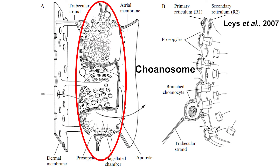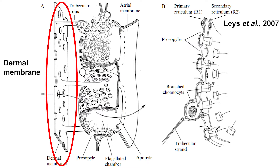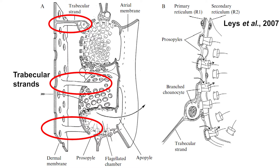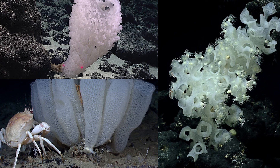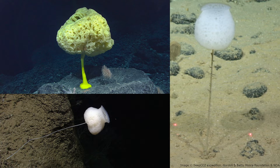They can also be quite big, like Monorhaphis chuni, which could grow to 3 meters long. The middle part of a glass sponge body is the choansome, which is where they feed. The outer layer is the dermal membrane, which has a lot of pores where water and other things can enter. Between the membrane and choansome are trabecular strands, which are networks that serve as passages into the choansome. The choansome has flagellated chambers which can pump water when external currents are absent. They can grow directly from the substrate or can also have a stalk to anchor.